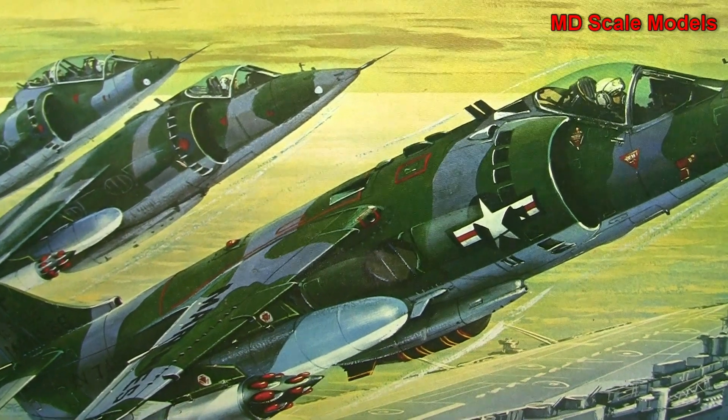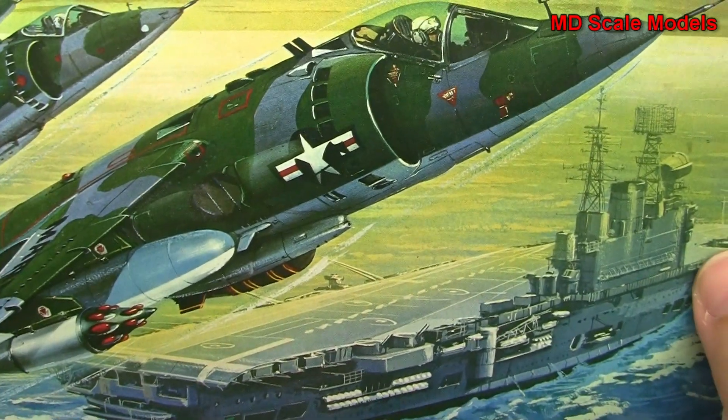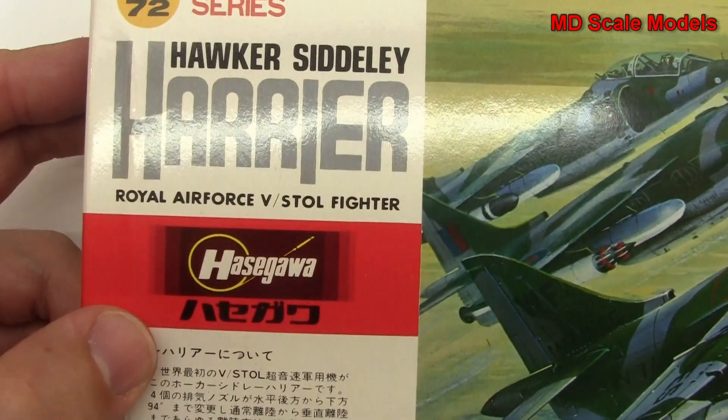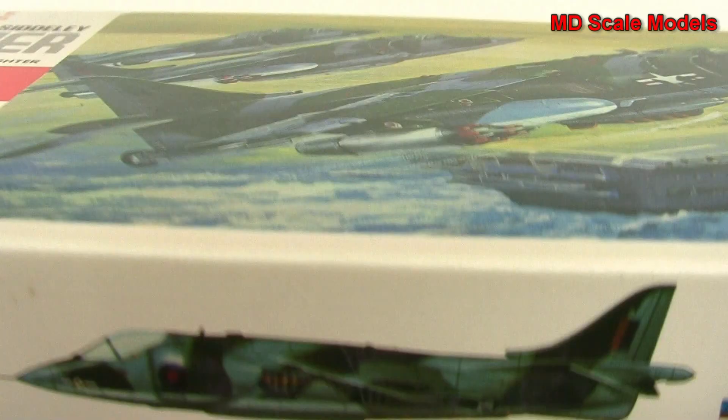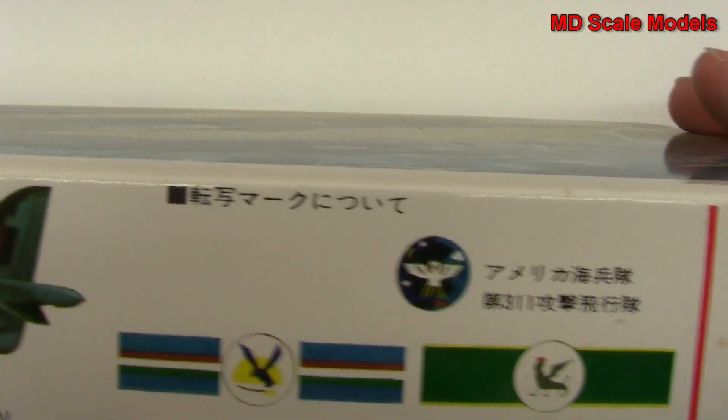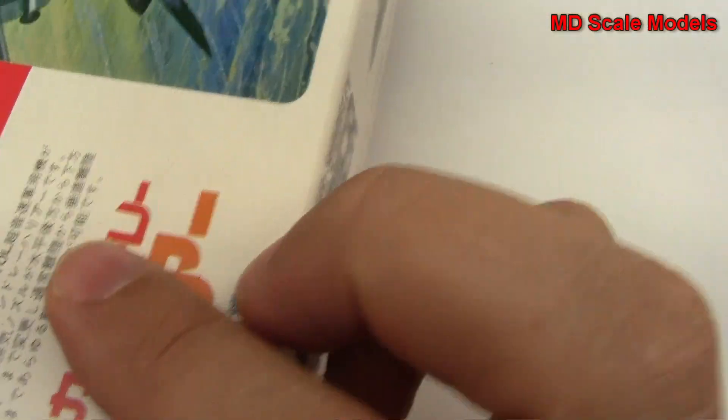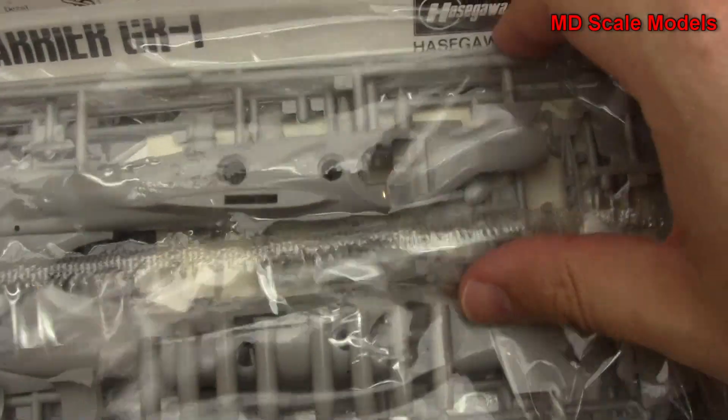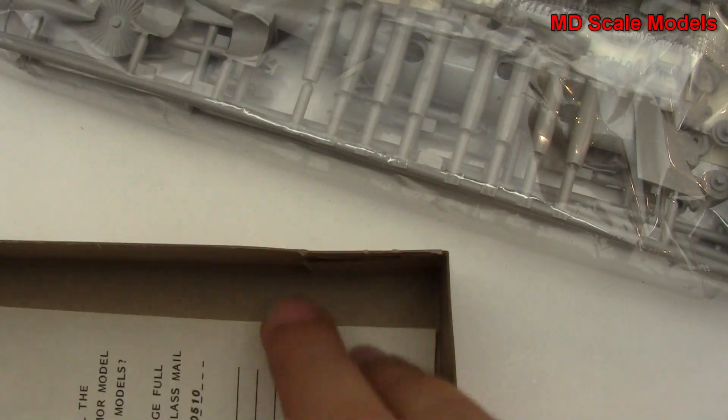This model review is of the Hawker Harrier, a 1:72nd scale model by Hasegawa. Here we have some pictures and nothing really else. Let's see how it looks on the inside here. We'll have a look at our sprues.